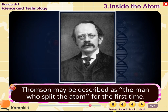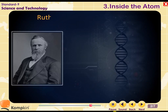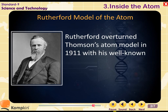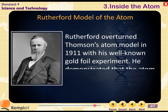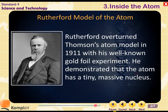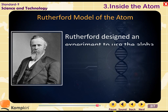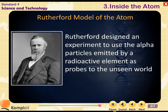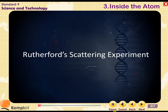Thomson may be described as the man who split the atom for the first time. Rutherford overturned Thomson's atom model in 1911 with his well-known gold foil experiment. He demonstrated that the atom has a tiny massive nucleus, using alpha particles emitted by a radioactive element as probes to explore atomic structure.